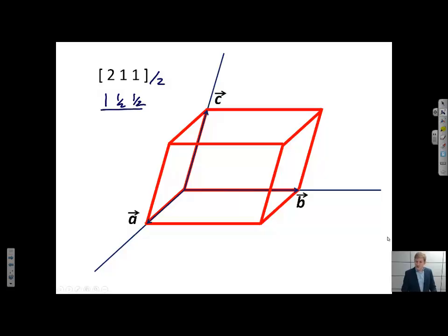This is going to be the position of the head of that direction. I can start at the origin and go to 1, 1/2, 1/2. So 1 is the fractional coordinate in the a direction, 1/2 in the b direction, and 1/2 in the c direction. This is a vector that goes from the origin to the exact middle of this front face.